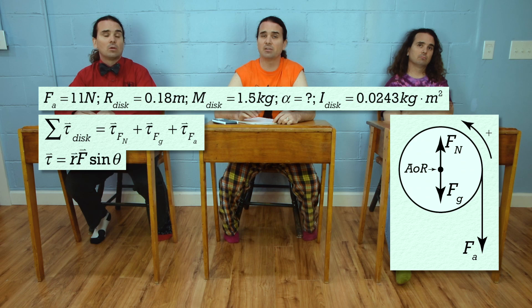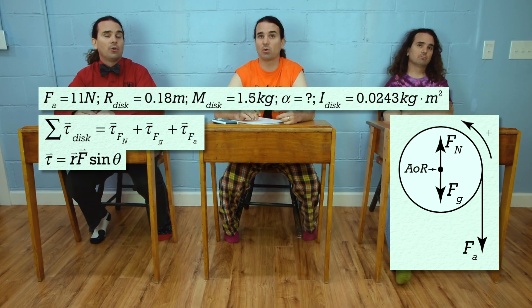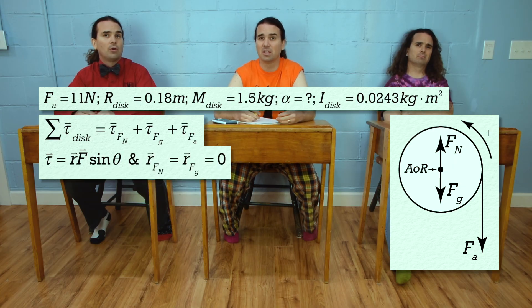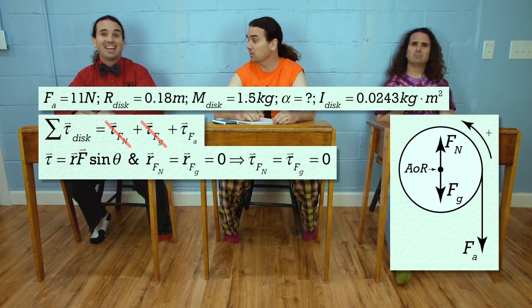Remember torque equals the r value times the force times the sine of the angle between those two vectors. That means both torques that act on the axis of rotation have an r value of zero and therefore cause zero torque on the disk.